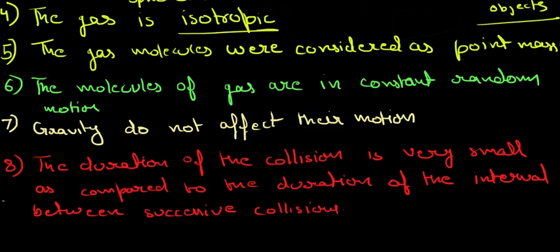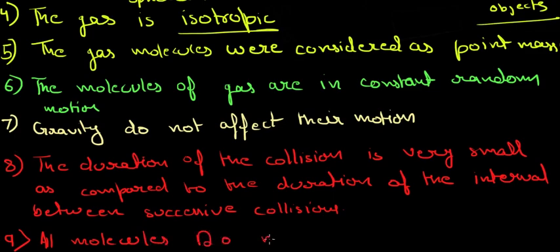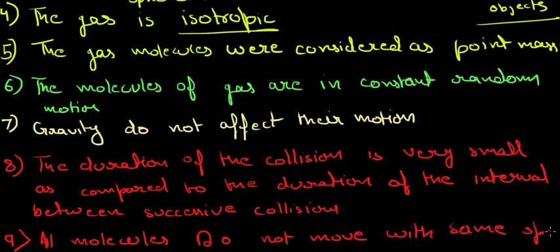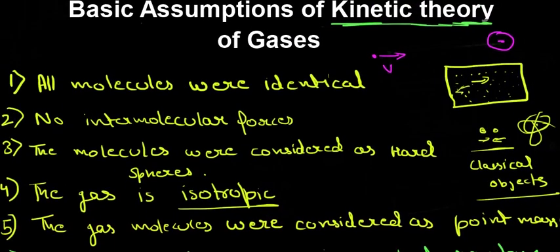The last assumption was that all molecules do not move with the same speed — some molecules move fast and some move slow. These were all the assumptions considered while developing the kinetic theory of gases.